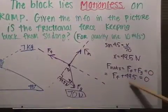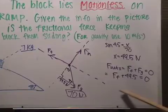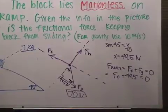All we do is subtract 49.5 to the other side, and we get force of friction is negative 49.5 newtons.